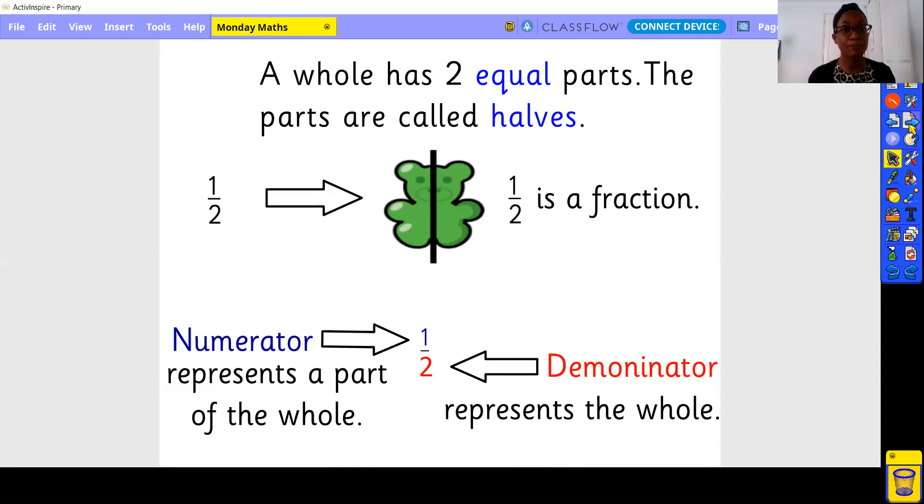You introduce a fraction to show a half. A half is a fraction. When we think about the half, we think about this fraction itself and how it's written. The numerator, which is at the top, represents a part of the whole. The denominator represents the whole. How many there are all together?